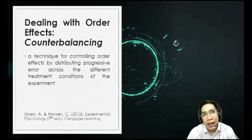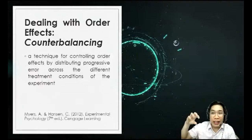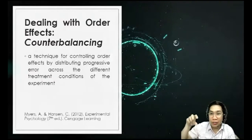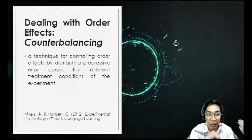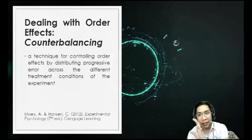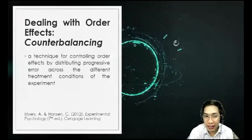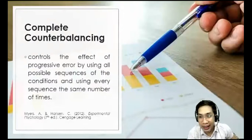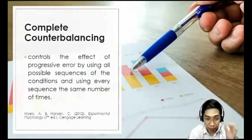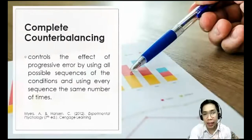Progressive error can be positive — improvement due to practice effect — or negative — decline due to fatigue. To address progressive error, we need to distribute it equally across all conditions. The technique for this is called counterbalancing.